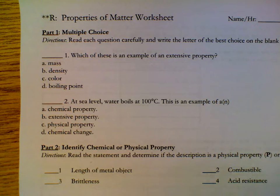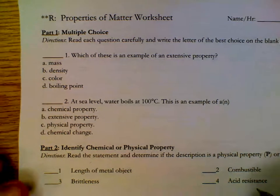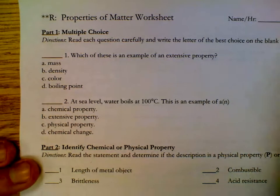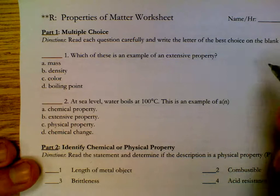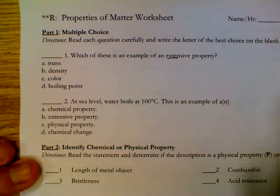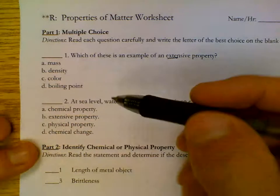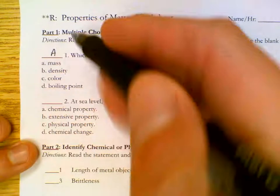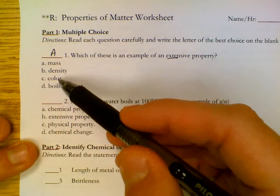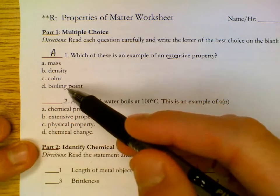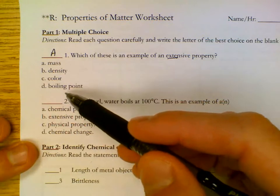This is the key for properties of matter worksheet. Which of these is an example of an extensive property? Extensive means it changes with the amount of sample you have. Mass does change with the amount you have. Density is always the same. The color is always the same. The boiling point of a substance is always the same.